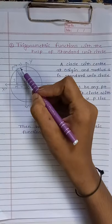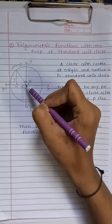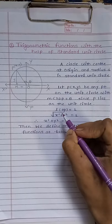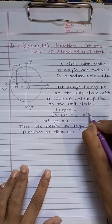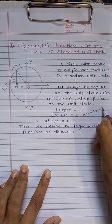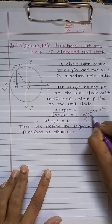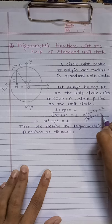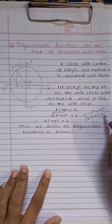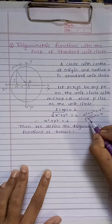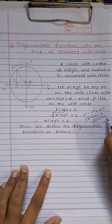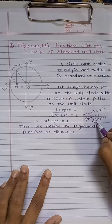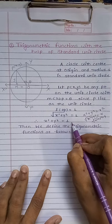Now, form a right angle triangle in this unit circle. Then applying the Pythagorean theorem, we get X squared plus Y squared equals R squared. Taking the square root on both sides, we get the square root of X squared plus Y squared equals R. Now, putting the value R equals 1, we get the square root of X squared plus Y squared equals 1. Squaring both sides again, we get X squared plus Y squared equals 1.